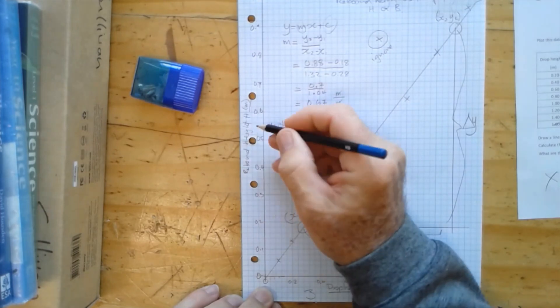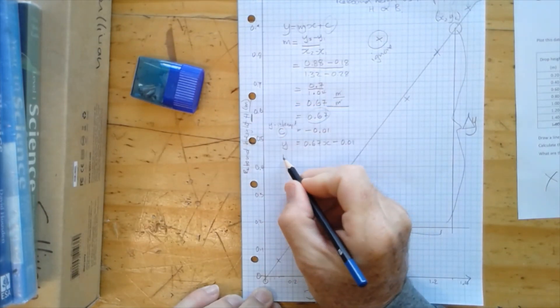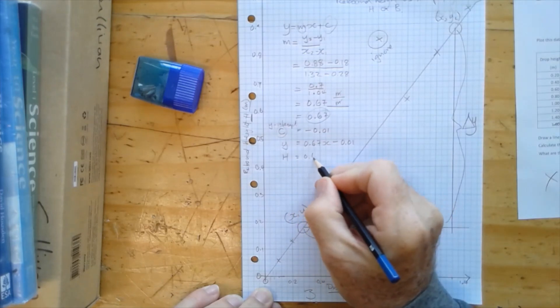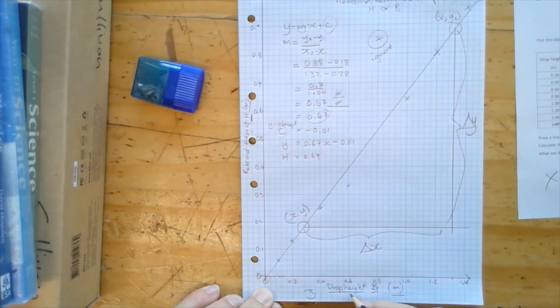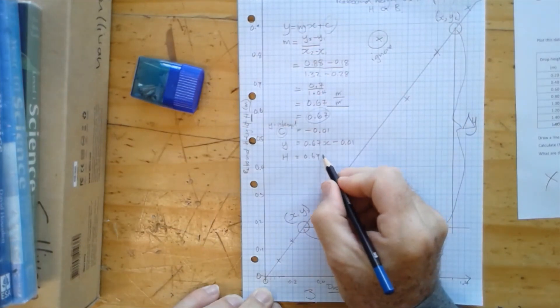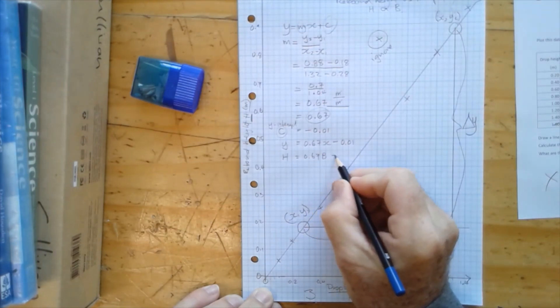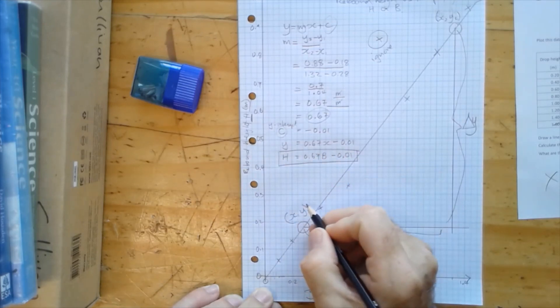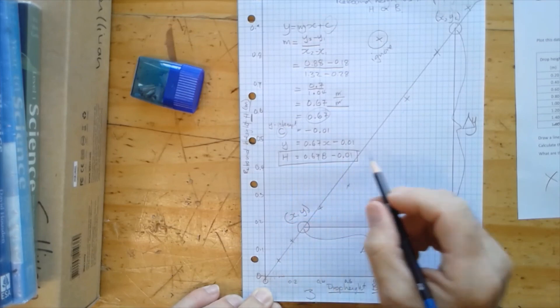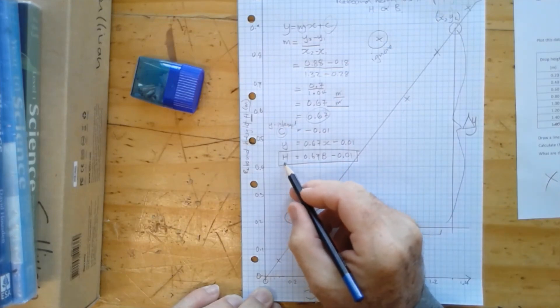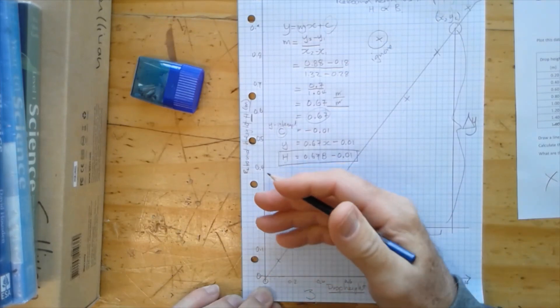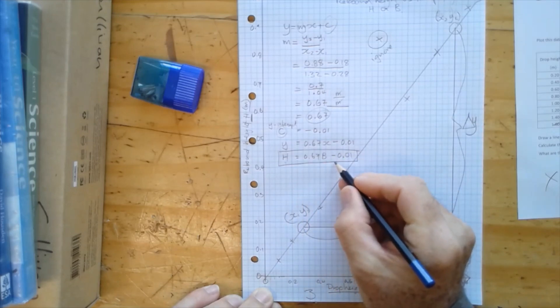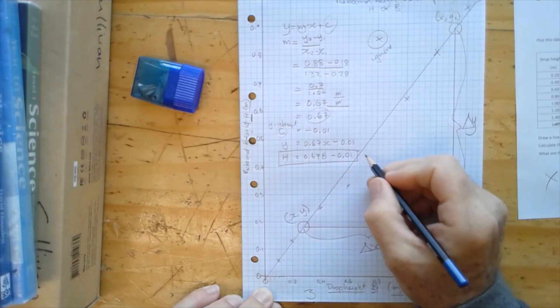This is the rebound height H. So we'll write H is equal to 0.67, and this of course isn't x, this is the drop height B. So it's 0.67 B minus 0.01. And here is the conclusion of our experiment. The conclusion of our experiment is the rebound height dropping our tennis ball is equal to 0.67 times the drop height minus this amount here. And that's our conclusion, so we're finished.